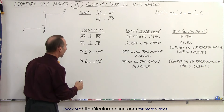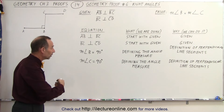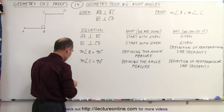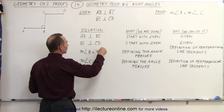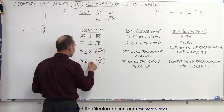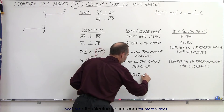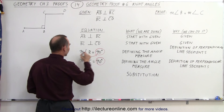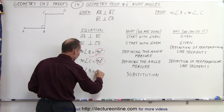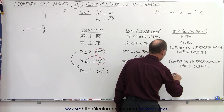Finally, we have that the measure of angle B equals 90 degrees, and the measure of angle C equals 90 degrees. Therefore, by substitution, I can claim that the measure of angle B must equal the measure of angle C. Since angle B equals 90 degrees and angle C equals 90 degrees, I can replace the 90 degrees with the measure of angle C, writing: measure of angle B equals the measure of angle C. The reason is the substitution property of equality.